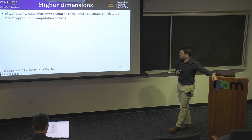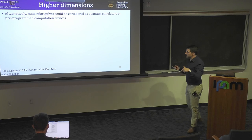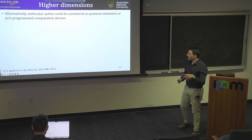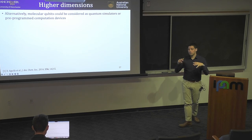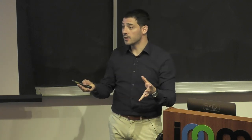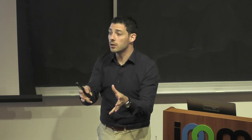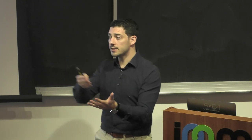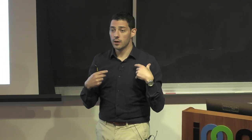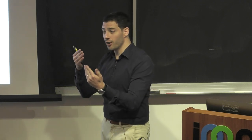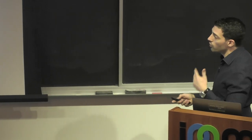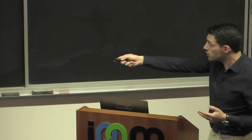Another way to approach this: molecular qubits or arrays of qubits can be considered as quantum simulators or pre-programmed quantum devices. You have some high-dimensional subspace with all kinds of couplings baked in, and you can encode the problem you want to solve into that Hamiltonian. Design a molecule that mimics the Hamiltonian you want to solve, then initialize, run it, and read it out to solve exactly — using the free evolution of the quantum states — the problem that you can't pose in reality.